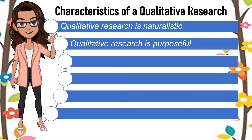Number two, qualitative research is purposeful. In conducting a qualitative type of study, the researcher should select the participants in a purposive manner. That is, they will be selected because they either have easy access to the information needed or simply have the knowledge to provide a great deal of information needed to the study. Hence, these participants are called information-rich in the context of research. This type of participant selection will validate the concept that qualitative study focuses on rich insights regarding the phenomenon rather than on mere numerical data simply obtained from surveys and questionnaires.